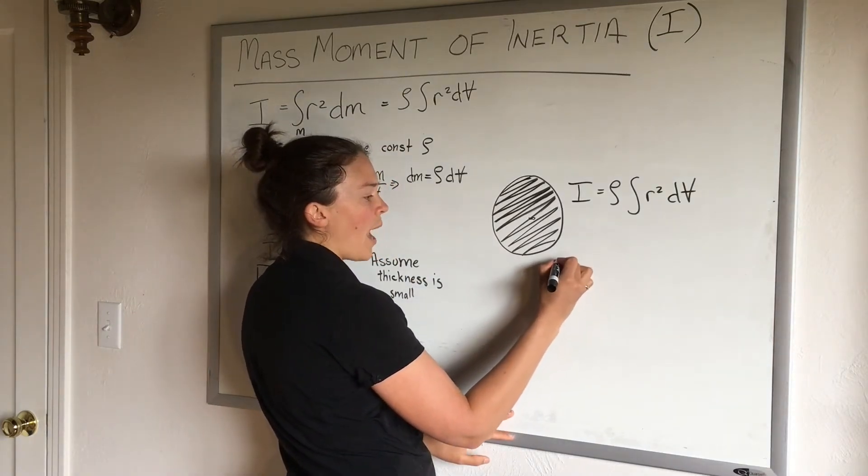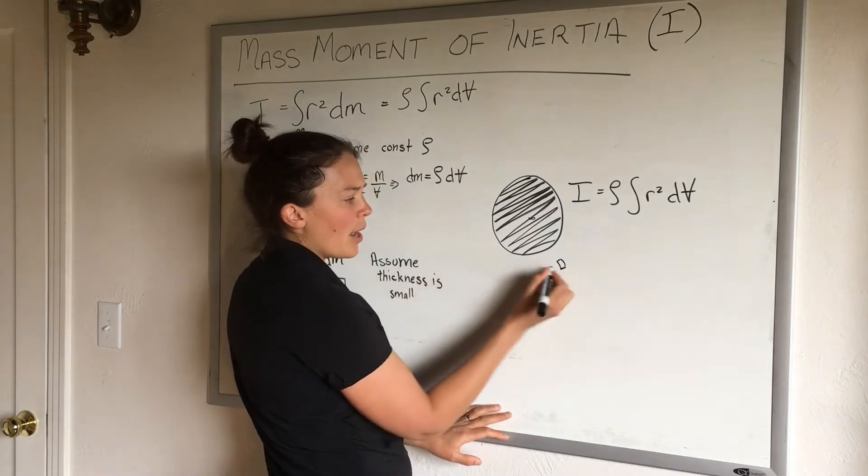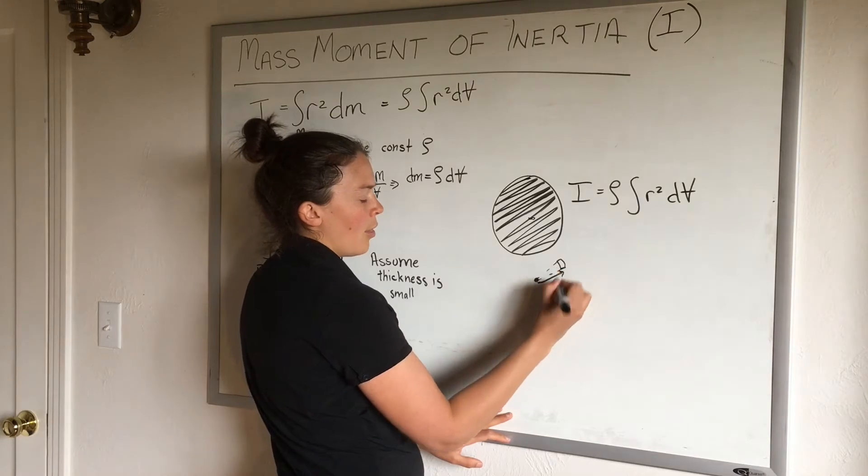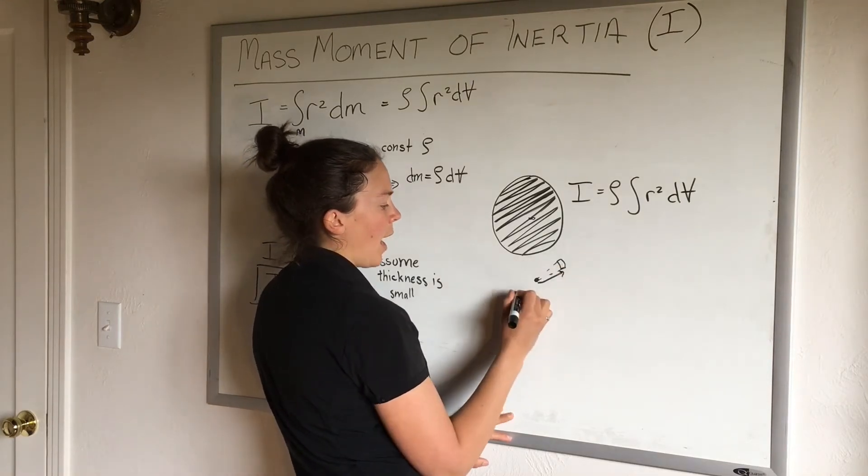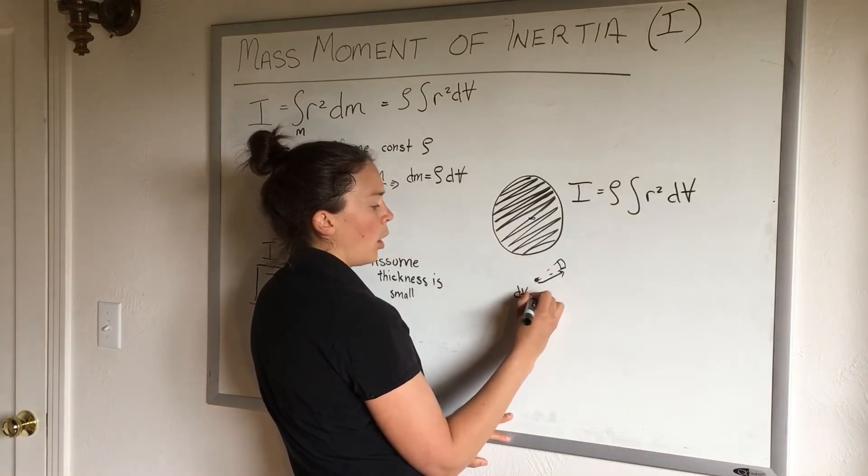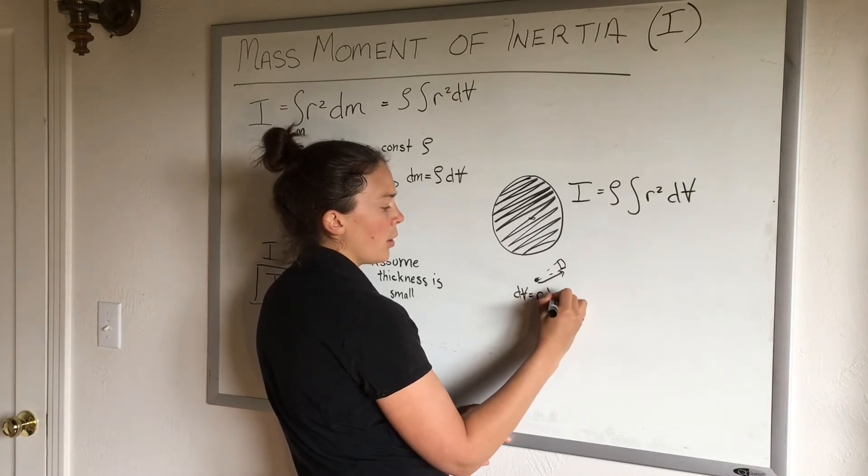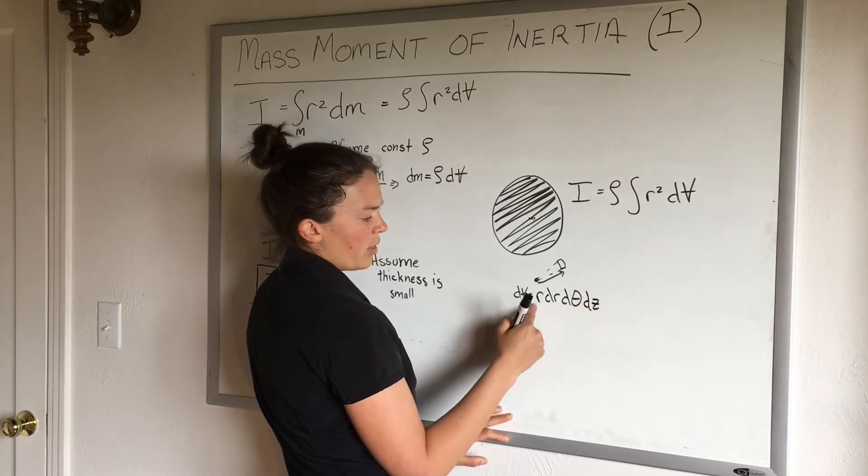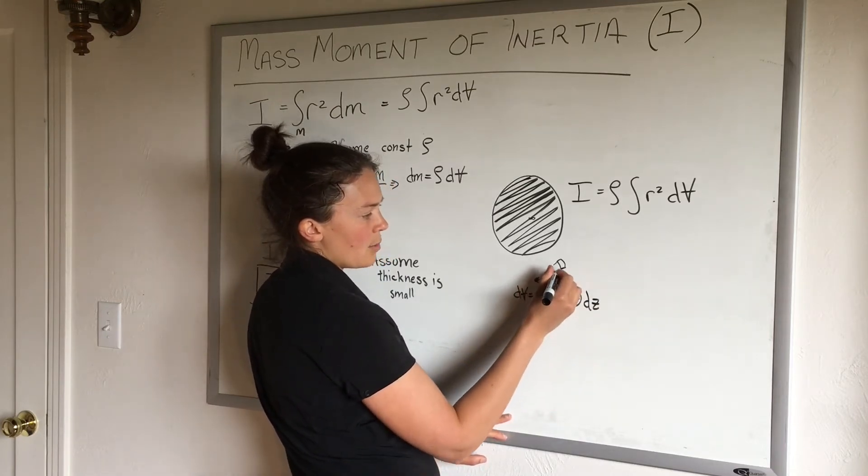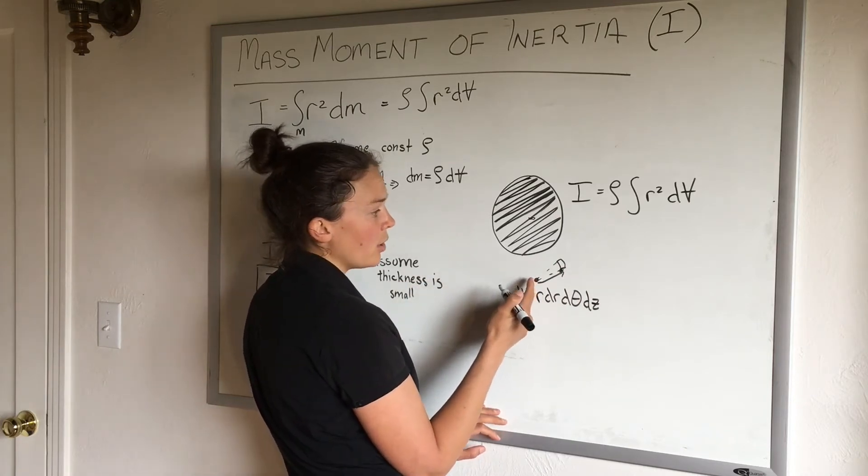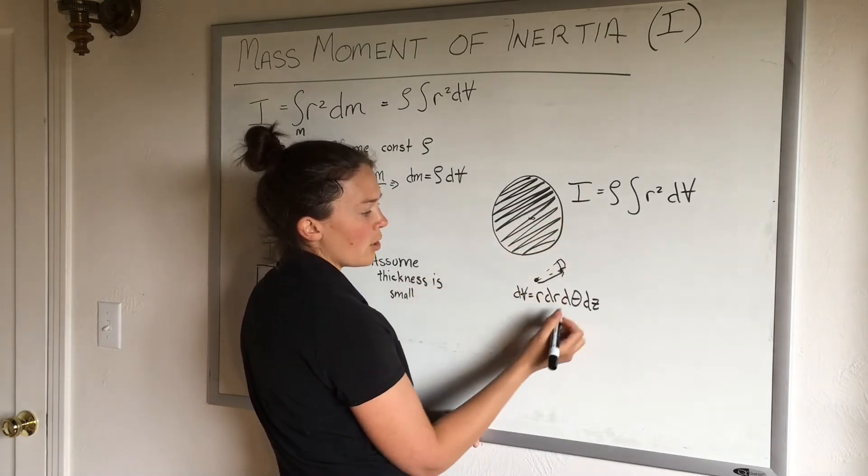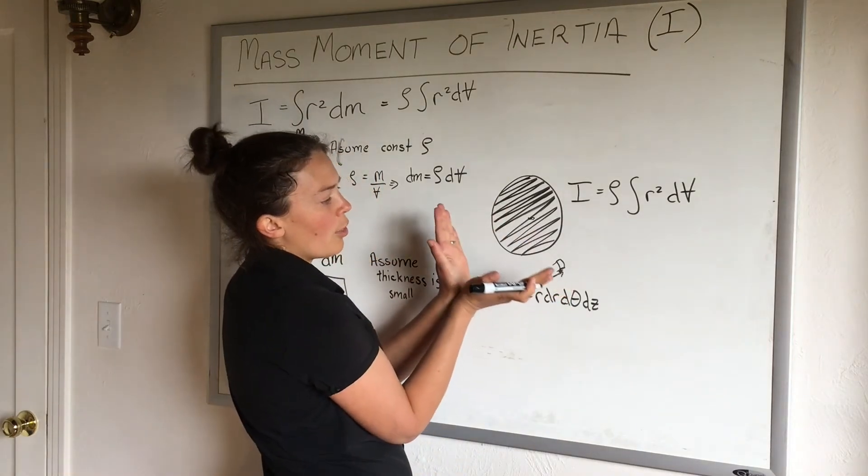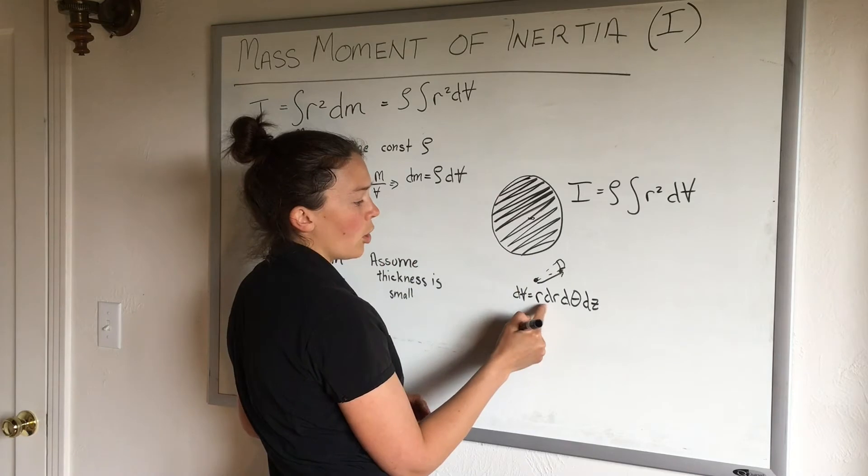For cylindrical coordinates, I have a little differential semi-circular element, and that dv has a volume of r dr dθ dz. The r is just because it has to be so far from the radius or from the center, and the farther you are from the center, the farther a differential element dθ in that theta direction—the bigger that will be. So that's why we have the r dr dθ dz.